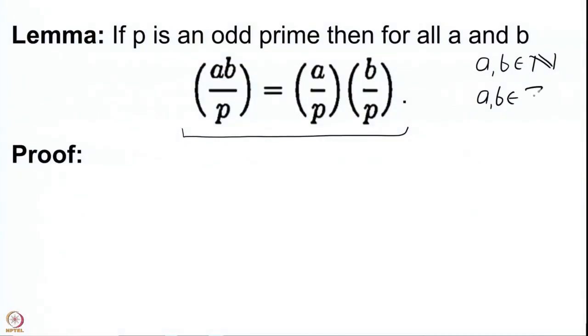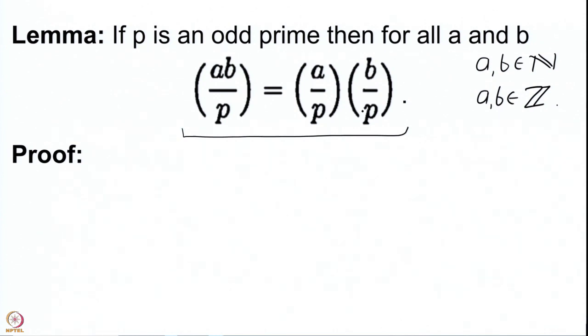So whenever you know the value of (3/23) and (5/23) that allows you to compute (15/23). This way, by taking products of small elements we can compute the Legendre symbols for all elements modulo P. You only need to compute it for primes, and if you know how to compute the Legendre symbol of −1 you can handle all integers.